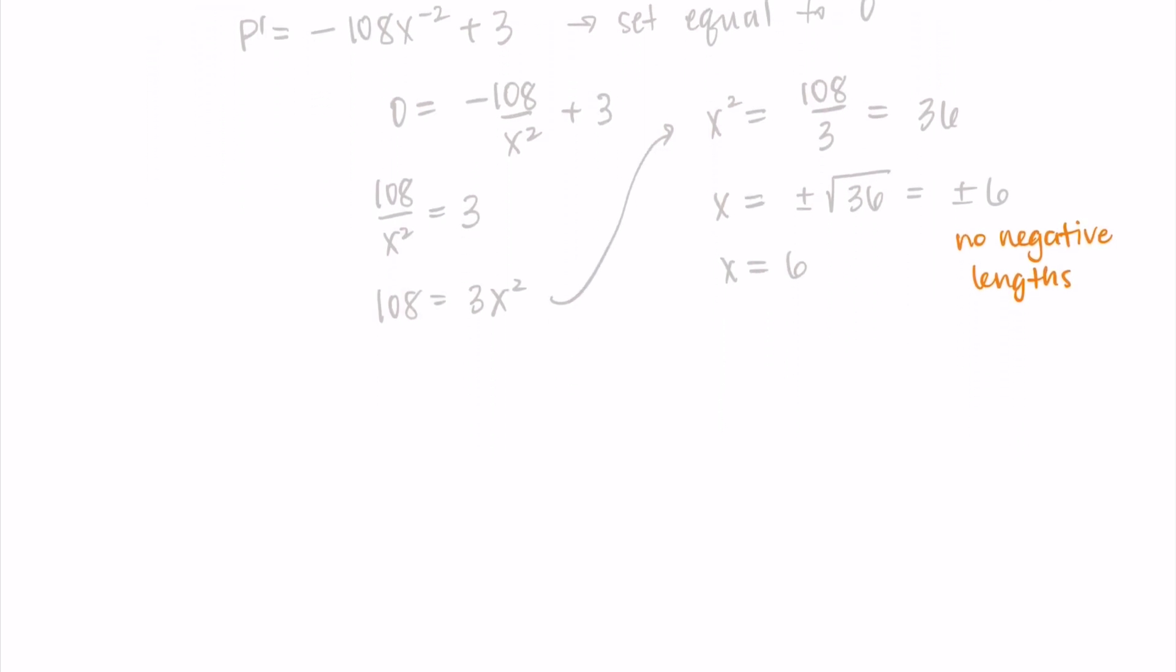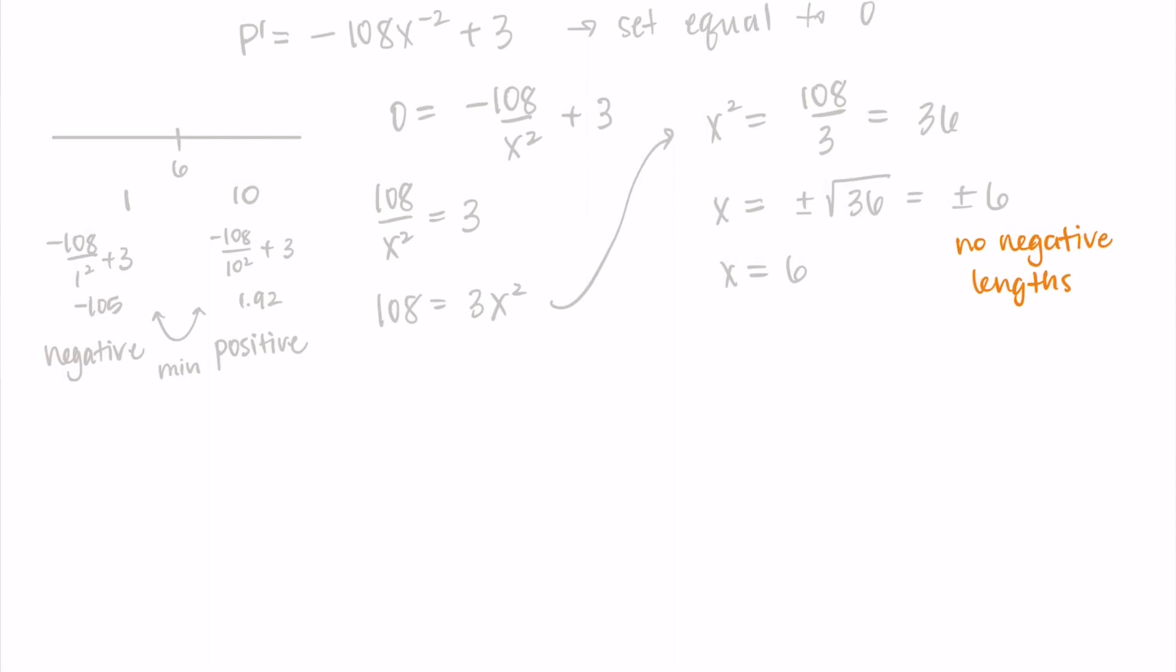Now truthfully, you can probably stop at this point and say that's my minimum, but it's always good just to check and make sure. So I'll plug in some test points into the derivative around that point 6. So I'm choosing 1 and 10. When I plug in 1 into the derivative, I'm getting negative 105. That's a negative. And when I plug in 10, I'm getting a yucky fraction that comes out to be 1.92. But the important part is that it's positive. So the derivative is changing from negative to positive, meaning six is indeed a minimum.